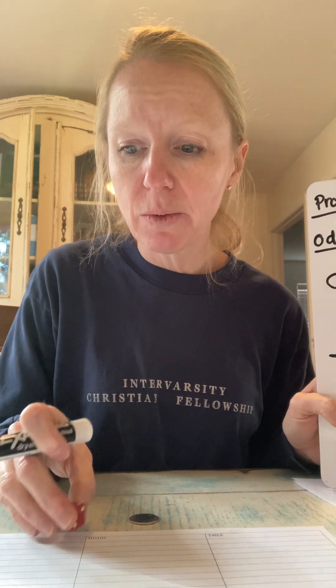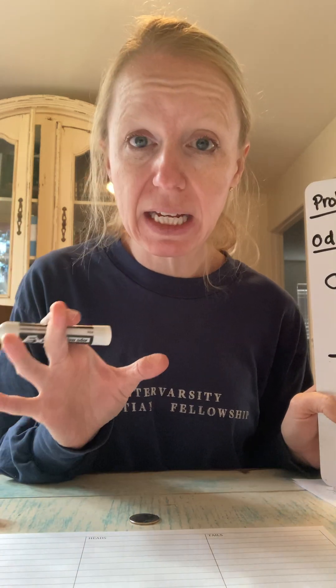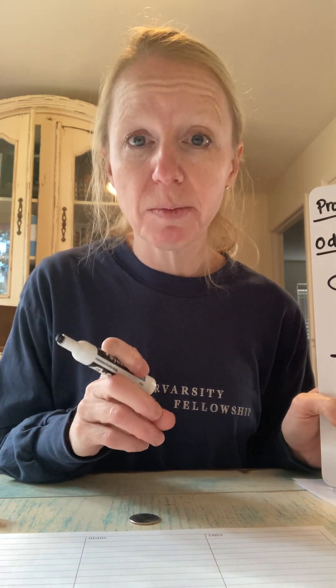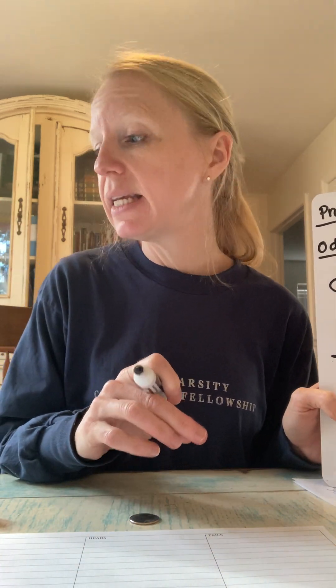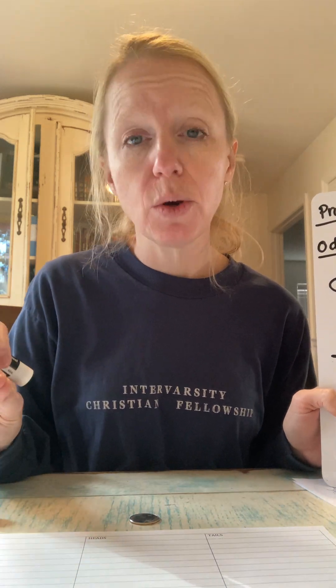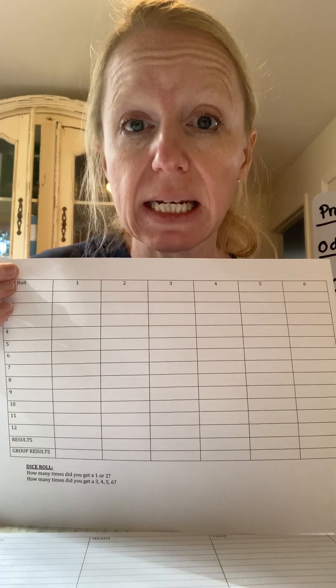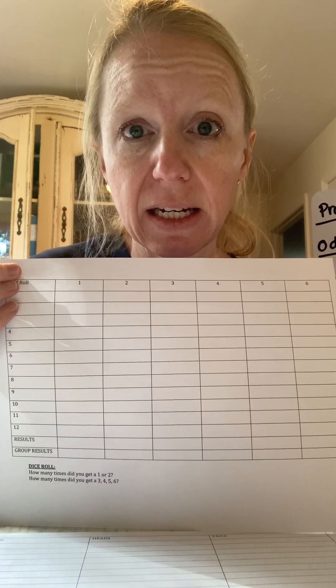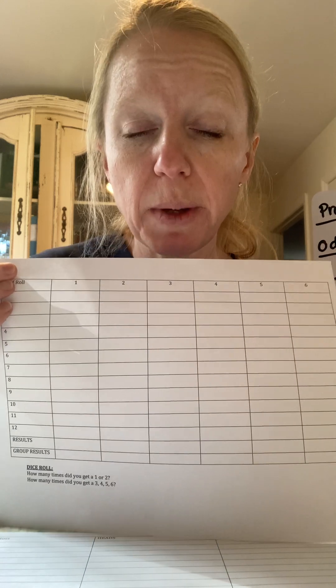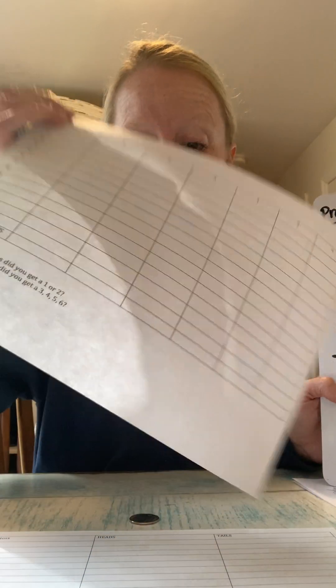Okay, moving on to the dice. You're going to do the same thing — start as a class doing the experiment 12 times, then break off into the same pairs or small groups. Give each pair their charts, a pencil, a coin, and a dice so they have everything they need for the day.